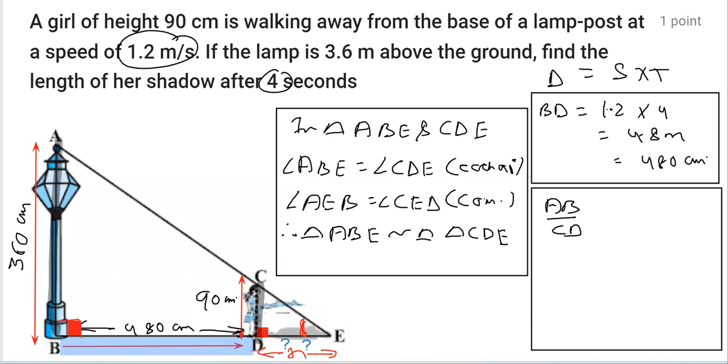...is equal to BE over DE. Now we know the length of AB as 360, CD which is 90...